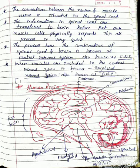When muscles are included in the central nervous system, it becomes the peripheral nervous system.